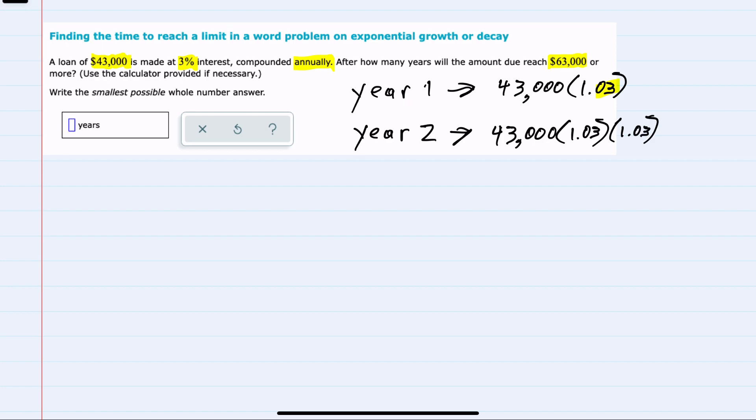And we can see that this pattern is going to repeat and that our expression for how much is due after t years will be $43,000 times 1.03 raised to the t power, t being the number of years.